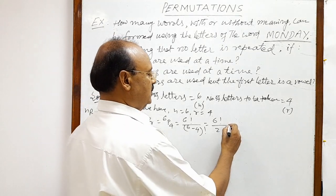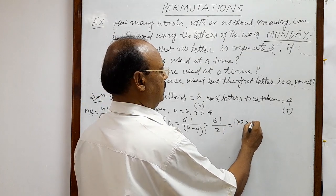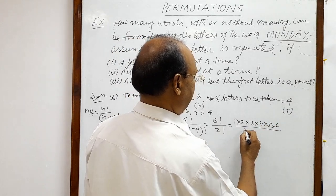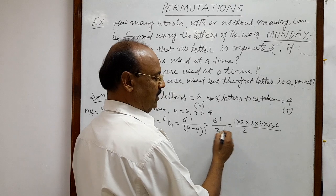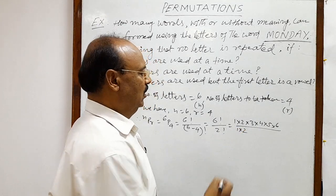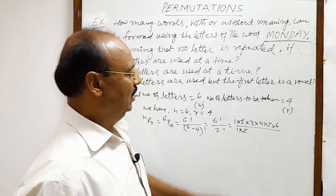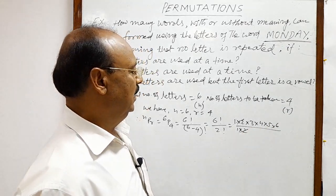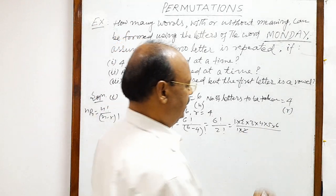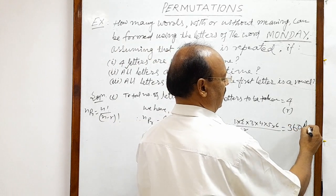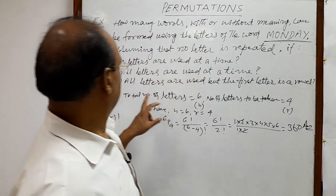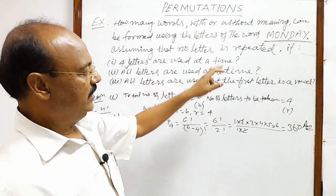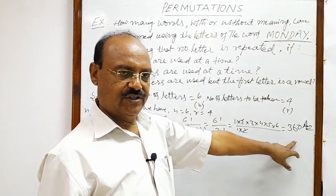So we write 6P4, which equals 6! divided by (6−4)! = 6!/2!. This is 1×2×3×4×5×6 divided by 2, and 2! cancels out, giving us 3×4×5×6 = 360. So the answer to the first part is 360.